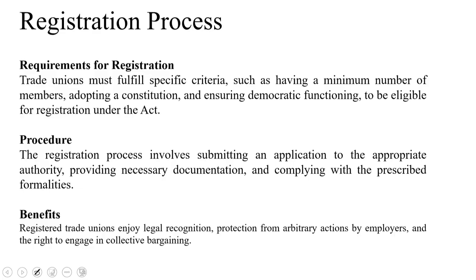Looking into the requirements for registration specifically, the minimum membership here is at least seven members, or all employees in an establishment with fewer than 100 workers, who are required to register a trade union. A unique name and address should be provided. The office address of the trade union needs to be submitted. There are certain membership rules — a copy of the union's rules outlining membership eligibility, subscription fees, office bearers, procedures for the working committee, elections and meetings should all be communicated.